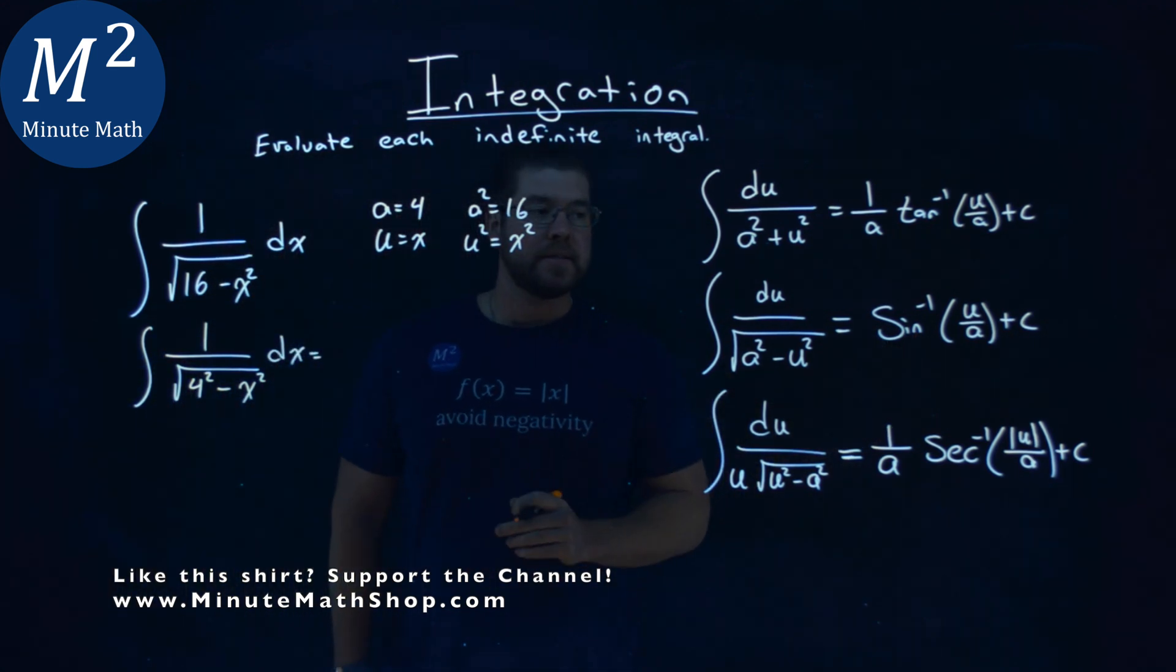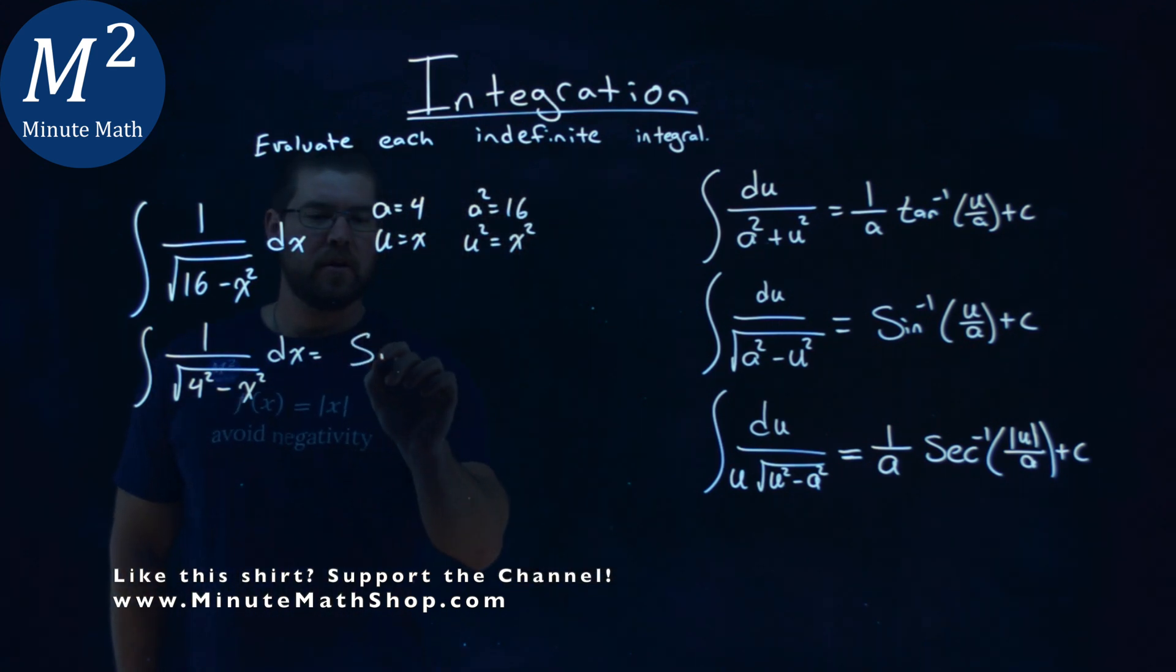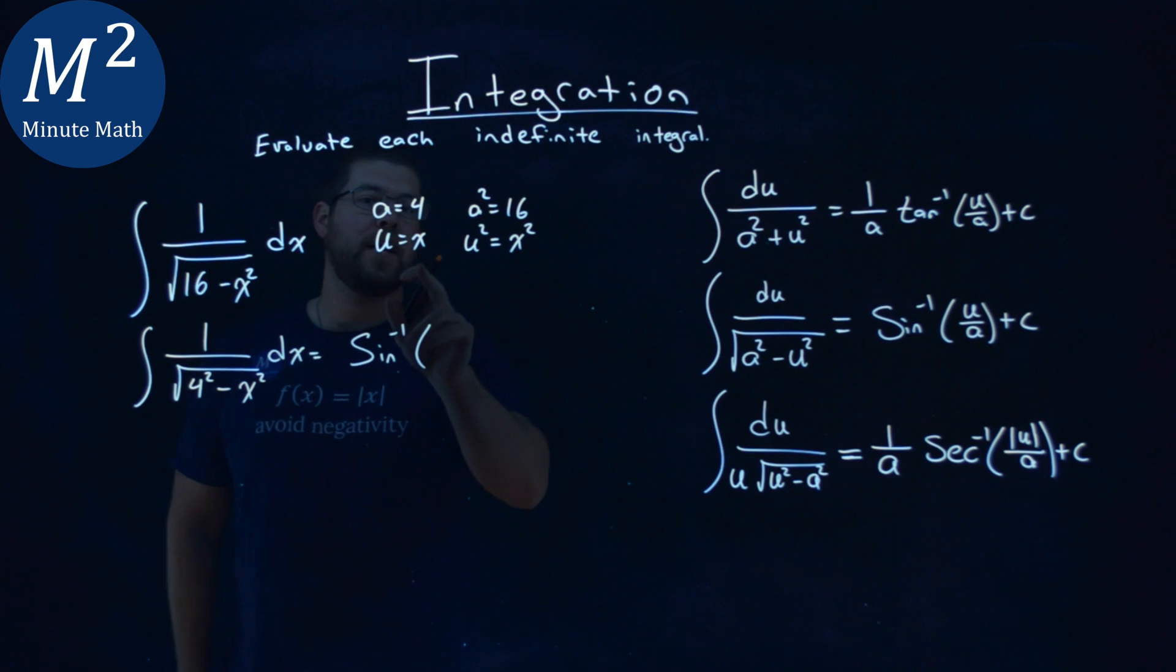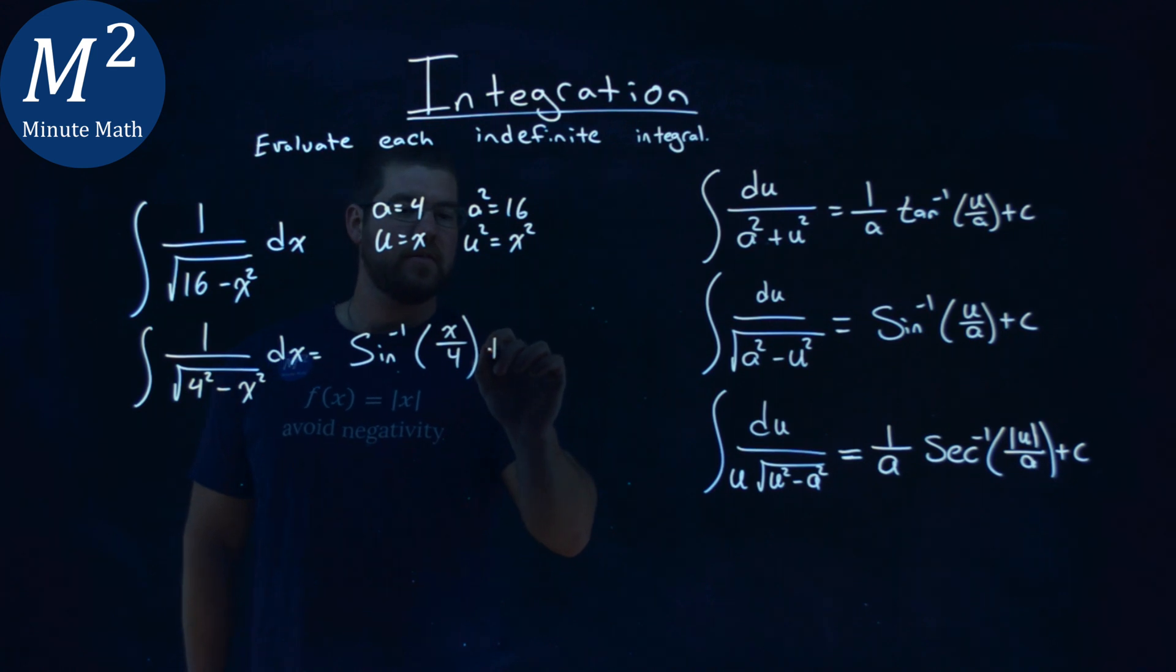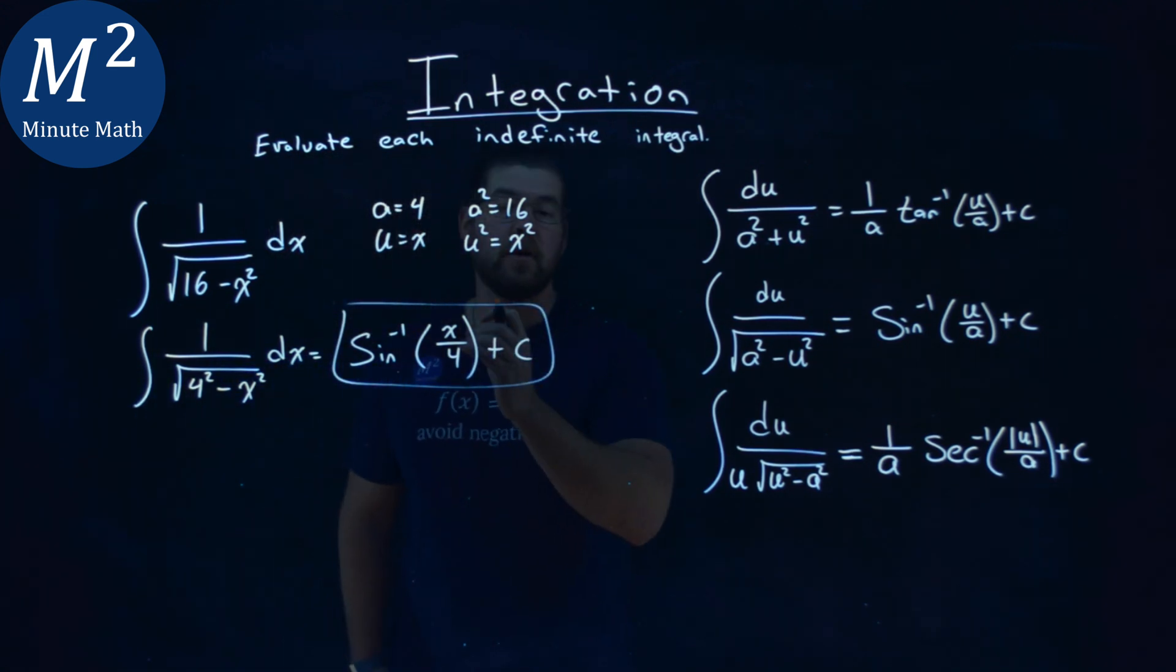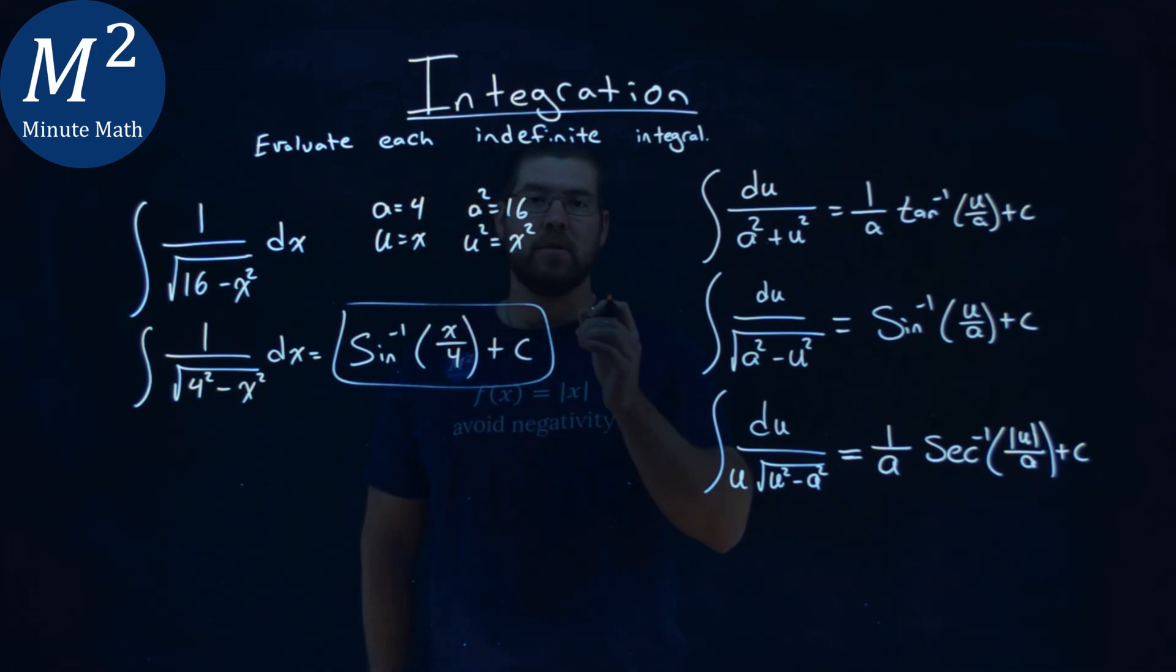Well, following our rules, the arc sine. So arc sine of our u value, our u value came out to be x, right? We set it over the a value, which is 4, plus c. And there we have the integral. Our final answer is the arc sine of x over 4 plus c.